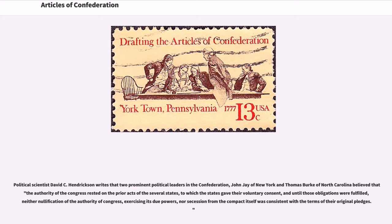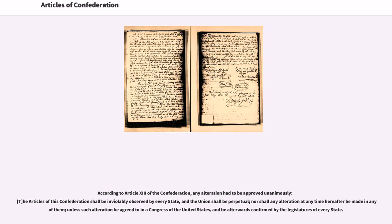Political scientist David C. Hendrickson writes that two prominent political leaders in the Confederation, John Jay of New York and Thomas Burke of North Carolina, believed that the authority of the Congress rested on the prior acts of the several states, to which the states gave their voluntary consent, and until those obligations were fulfilled, neither nullification of the authority of Congress nor secession from the Compact itself was consistent with the terms of their original pledges. According to Article 13 of the Confederation, any alteration had to be approved unanimously: 'The Articles of this Confederation shall be inviolably observed by every state, and the Union shall be perpetual, nor shall any alteration at any time hereafter be made in any of them, unless such alteration be agreed to in a Congress of the United States, and be afterwards confirmed by the legislatures of every state.'